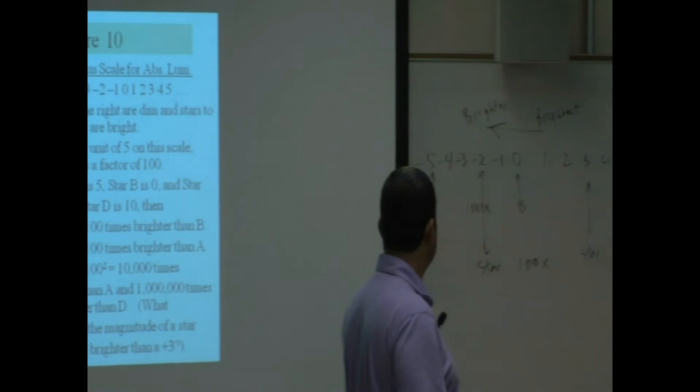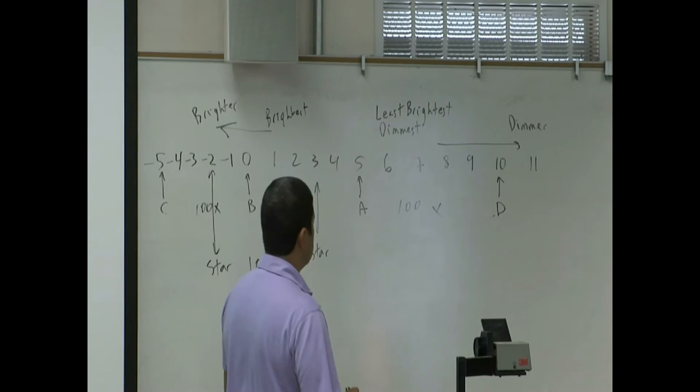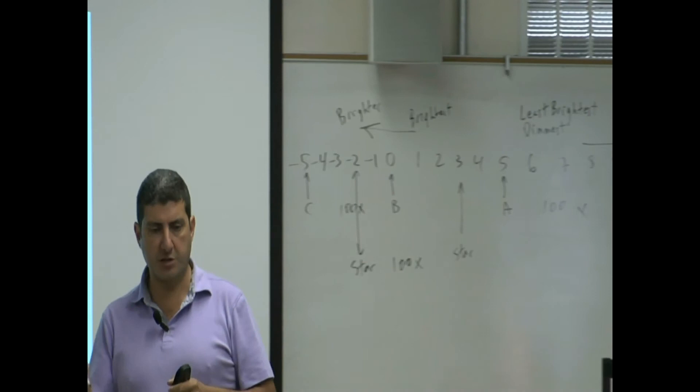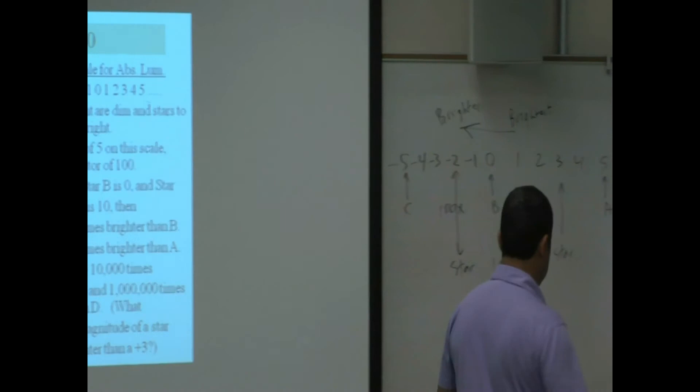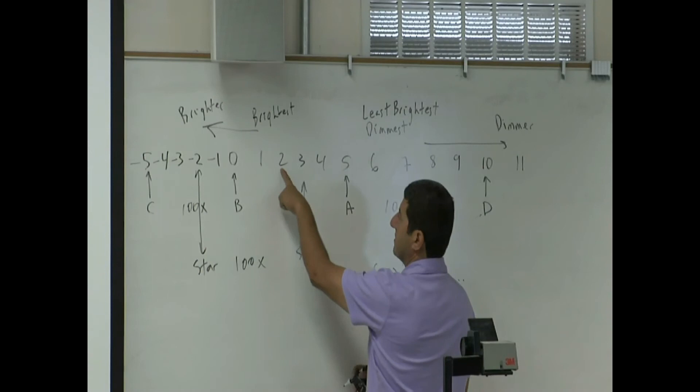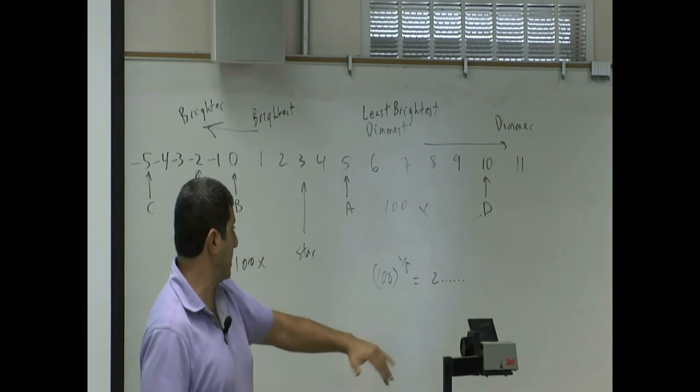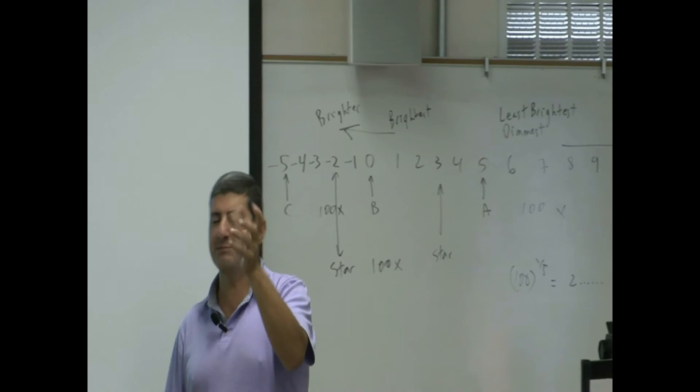Between every two units, between like every single unit, if every five is 100, what's every single one? That's a good question. If every five is 100, what's every single one? It's 100 to the power of one-fifth. 100 to the power of one-fifth, and I think you get a certain decimal answer, two-point-something-something-something. So that means this is two-point-something-something brighter than that. So every time you could do that, by the time you get to five of them, two to the power of whatever that number is, to the power of five, you get 100. So every single one is like something like a decimal number, two-point-something.